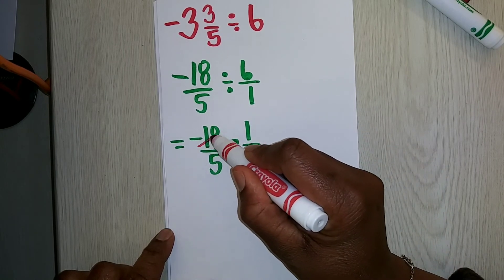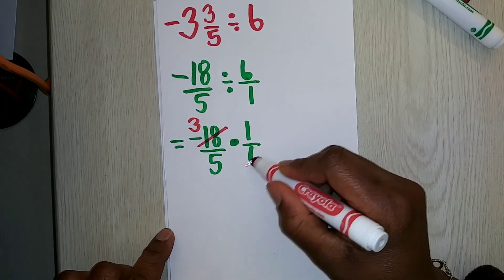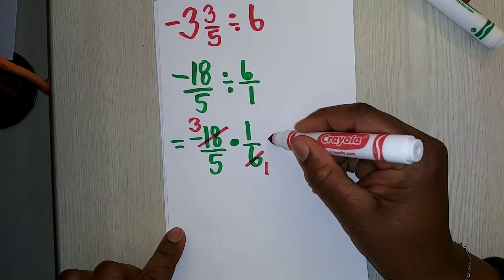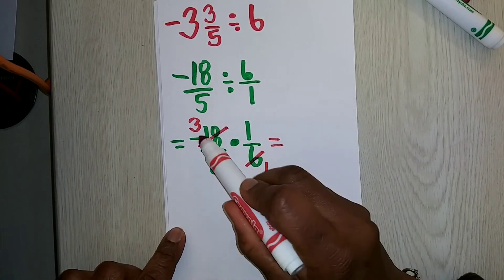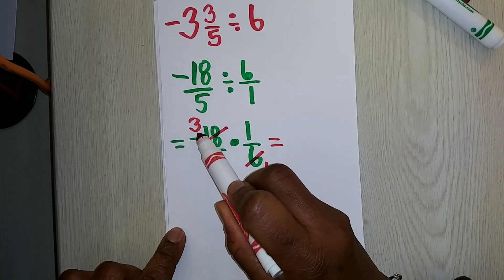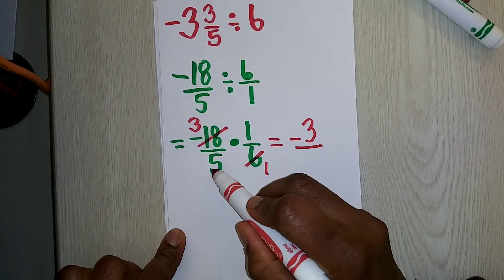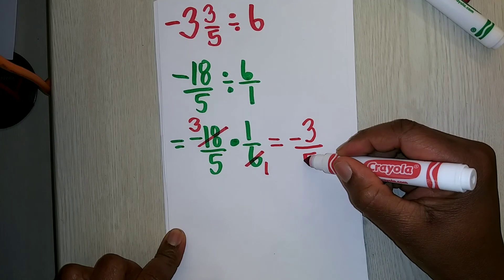18 divided by 6 is 3, and 6 divided by 6 is 1. So when I multiply my numerator and numerator, it is negative 3 times 1, which is negative 3, and denominators is 5 times 1, which is 5.